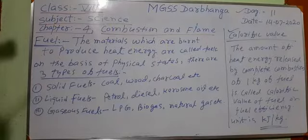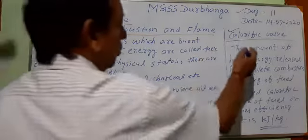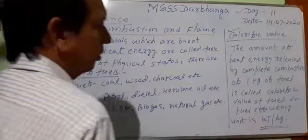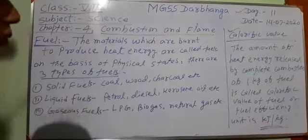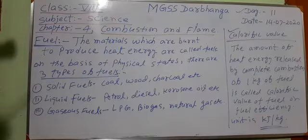Fuel efficiency or calorific value of fuel will decide which fuel should be used for which purpose. The SI unit of calorific value is kilojoule per kg. There are many other units also — calorie per gram, kilocalorie per gram, or kilojoule per kg.